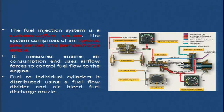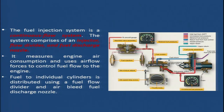The fuel injection system is a continuous flow system comprising an injector, a flow divider, and fuel discharge nozzles. It measures engine air consumption and uses airflow forces to control fuel flow to the engine. Fuel to individual cylinders is distributed using a flow divider and air-bleed fuel discharge nozzles.